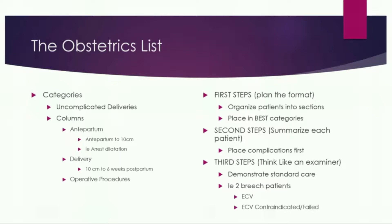The delivery column is anything that happens from 10 centimeters to 6 weeks postpartum. So shoulder dystocia would go here, lacerations would go here, postpartum hemorrhage, postpartum depression, or if they were diabetic and you did any type of testing — that would go in the delivery column. There's also a separate column for operative procedures. It's important that anything done, such as a fourth-degree laceration listed in the delivery column, should have a corresponding entry in operative procedures — for example, 'repair of fourth-degree laceration' — so the columns correspond.